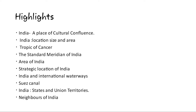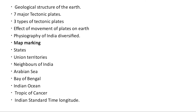The main points of this chapter are: India as a place of cultural confluence; India's location, size and area; Tropic of Cancer; the standard meridian of India; area of India; strategic location of India; India and international waterways; India's states and union territories; neighbours of India; geological structure of the earth; major tectonic plates; three types of tectonic plates; effects of movement of plates on earth; and physiography of India. Another main important topic of this section is map marking, from which you will get one question for marking on the map of India.